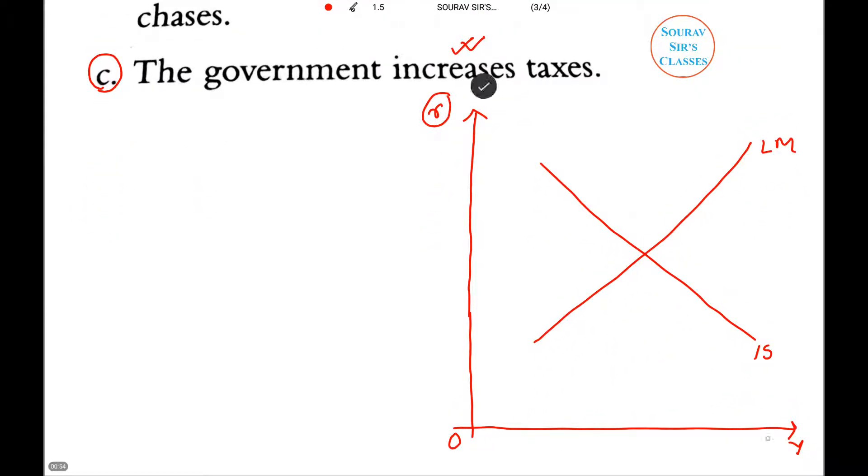In the figure given below I have taken R and Y on the two axes. I have drawn a negatively sloped IS curve and a positively sloped LM curve. Now let us first write the equation of these two curves. The IS curve is written by C naught plus C1(Y), which is the autonomous part of consumption function. This is the induced part which is the MPC, plus the investment function.